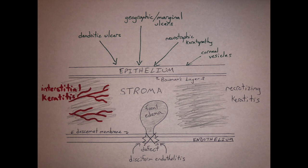We can have neurotrophic keratopathy, which is a super large oval ulcer, or simply an epithelial defect that isn't painful — that's due to reduced corneal sensitivity. And last but not least, we can also have corneal vesicles.